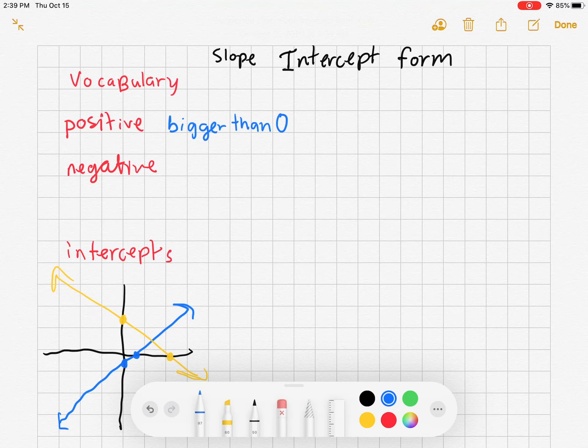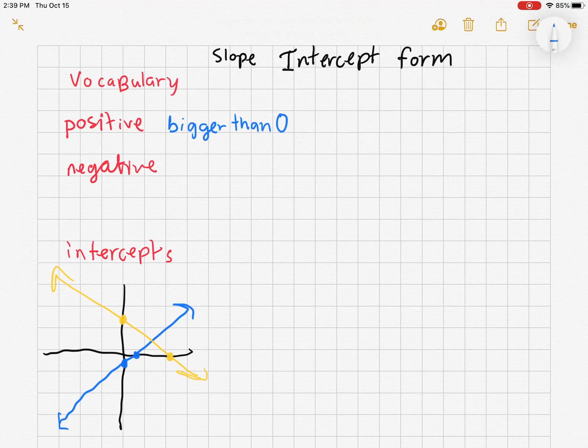So for example, consider the one down here at the bottom. As we go from left to right, like we read, we notice that the blue line is pointing up. So the blue line is an example of a positive slope.